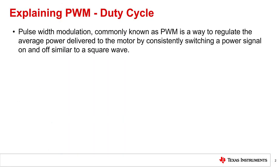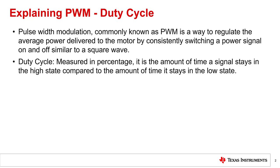Pulse width modulation, commonly known as PWM, is a way to regulate the average power delivered to the motor by consistently switching a power signal on and off, similar to a square wave. There are two important considerations when designing a PWM signal: frequency and duty cycle. The percentage of time a signal is high rather than low is what we call the duty cycle, measured by the fraction of time spent in the high state.